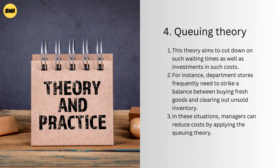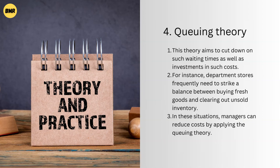Queuing Theory: every business frequently experiences periods of waiting in lines for personnel, equipment, resources, or services. For instance, a manufacturing company might occasionally accumulate stock of unsold goods as a result of erratic demand. This theory seeks to address these issues. It aims to cut down on such waiting times as well as investment in such costs. For example, department stores frequently need to strike a balance between buying fresh goods and clearing out unsold inventory. In these situations, managers can reduce costs by applying the Queuing Theory.